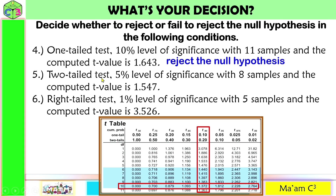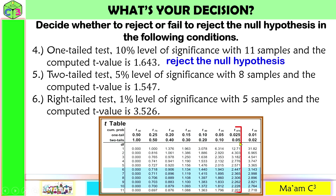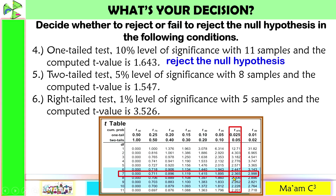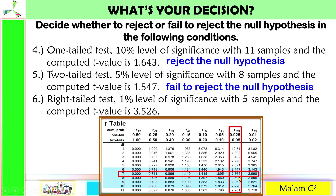Number 5 is a two-tailed test at 5% level of significance, with 8 samples giving degrees of freedom of 7. The critical value is 2.365. The computed T value is 1.547, which is less than 2.365. Therefore, we fail to reject the null hypothesis.